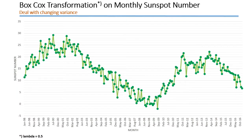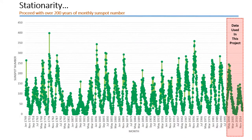To deal with the changing variance in the data, we applied a Box-Cox transformation with lambda equals 0.5. Although the changing variance was already not seen after transformation, there is an evident trend visible in the plot which suggests the use of differencing. However, we found that the sunspot series possesses a natural stationary process. This conclusion was derived from the use of over 200 years of monthly sunspot data. A Dickey-Fuller unit root test was applied to this entire series, and the results show that the entire monthly sunspot data is stationary. Therefore, it can be considered that the portion of the data we use is also stationary.